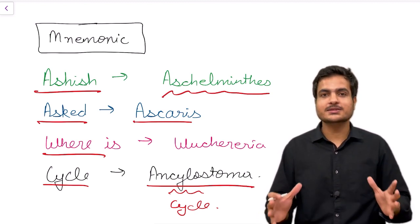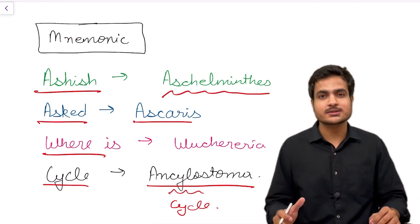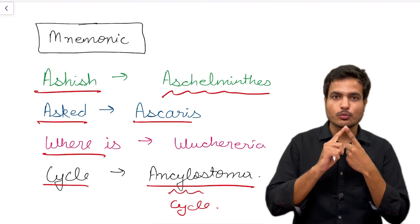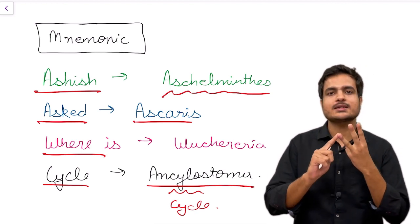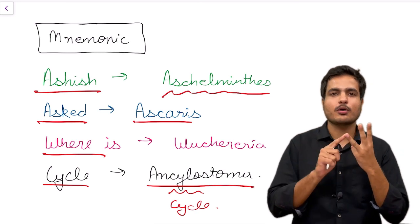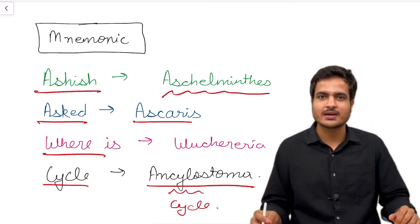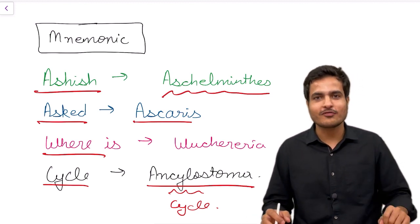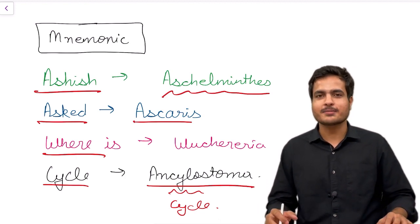With this we have completed the discussion of Aschelminthes, the roundworms, with characteristic three features. First we have pseudocoelom here, second we have excretory tubes, and third, from this phylum onwards we have a completely developed digestive system for each and every phylum. Here we end our discussion of the fifth phylum of animal kingdom, that is Aschelminthes. Thanks for watching this video, do check my other videos.